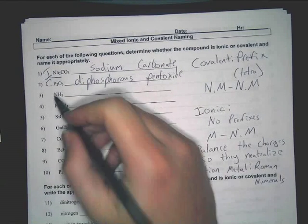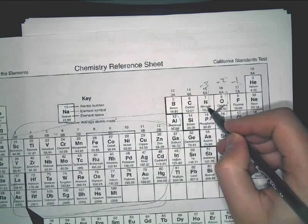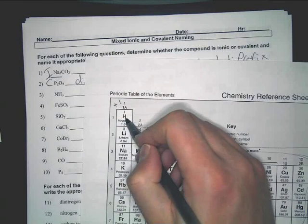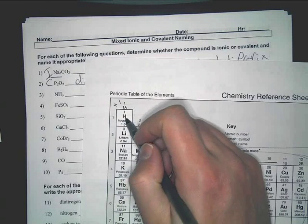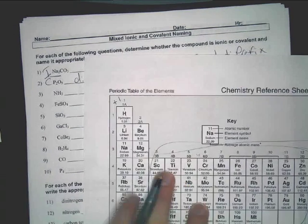Now, you look at the next one. N and H. Now, we've got nitrogen over here. Hang on. Nitrogen, and then you've got hydrogen. Now, hydrogen is on the left side, but is it a non-metal? Is it a non-metal? Yes.